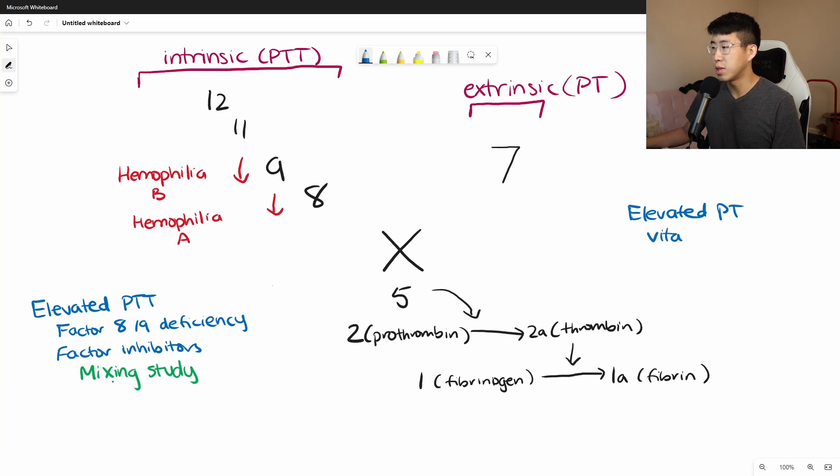So the primary one is going to be a vitamin K deficiency. You can also see this in the setting of warfarin use. And then also in just chronic liver disease, you can have a depletion of all your factors, and you're especially going to see an elevation in your PTT.